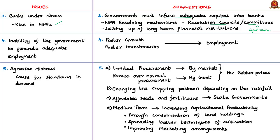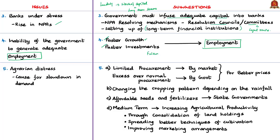The author suggests that NPA-related cases can be resolved through resolution councils or committees instead of the legal or investigative agency route. Since long-term lending financial institutions are absent, banks provide both working capital and long-term loans. As a medium-term plan, the government should consider setting up a separate long-term financial institution, partly funded by the government. The third issue is employment — the economy is not generating adequate employment, and the answer is only growth.